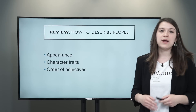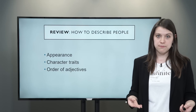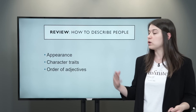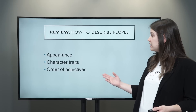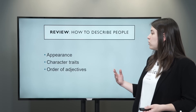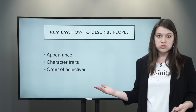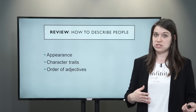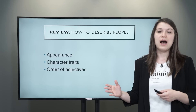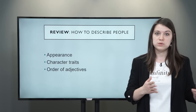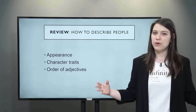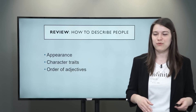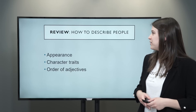We talked about how to describe people. So we looked at how to describe people according to their appearance, according to their character traits, and we looked at the order of adjectives — so how to use multiple adjectives in one sentence and which one comes before the other.